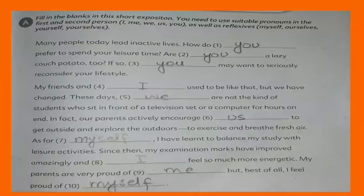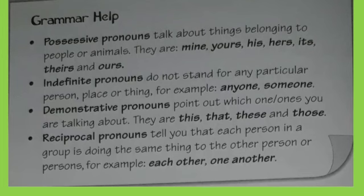So this is your sample page. Then next is possessive pronoun. Possessive pronouns talk about things belonging to people. Demonstrative pronouns point out which ones you are talking about — these, that, those. Then reciprocal pronouns are those that tell that each person in a group is doing the same thing to the other person — each other, one another.